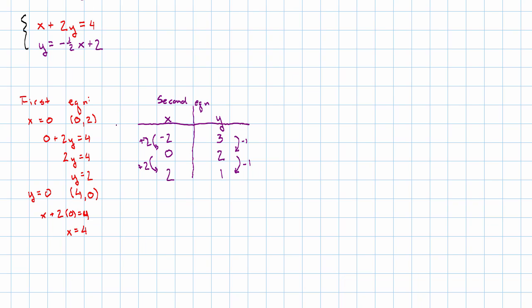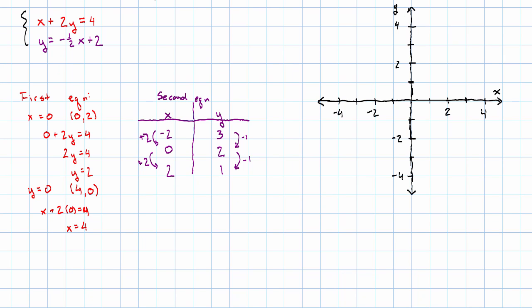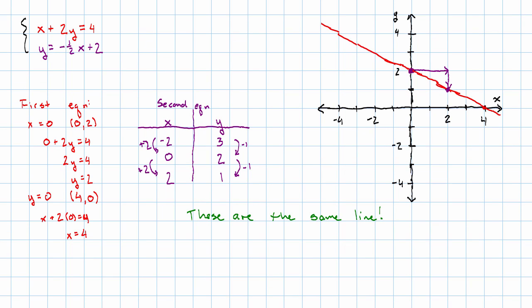Again, it looks like just going to 4 in either direction is going to work just fine for our axes. Now we draw our first line. x intercept 4, y intercept 2. Fill in the line. And then we draw our second line. y intercept 2, slope negative 1 half means over 2, down 1. Wait a minute. These are the same line. That means every point on the first line is also on the second line, and every point on the second line is also on the first line.